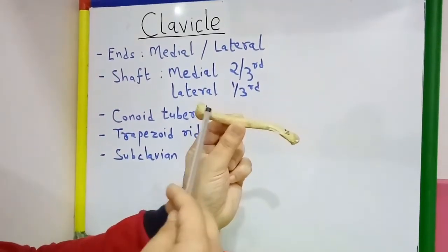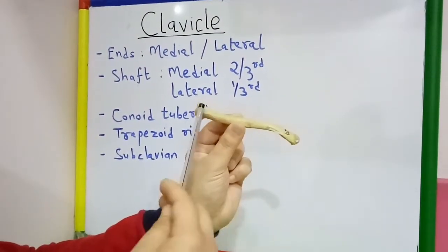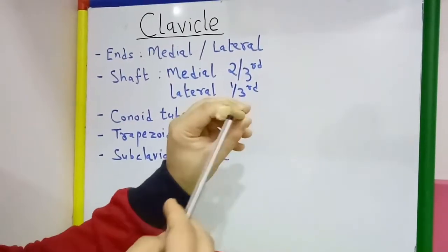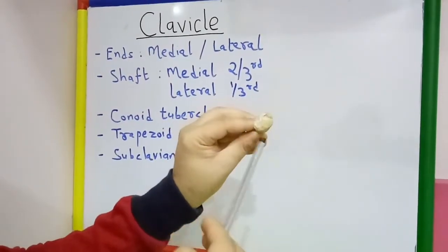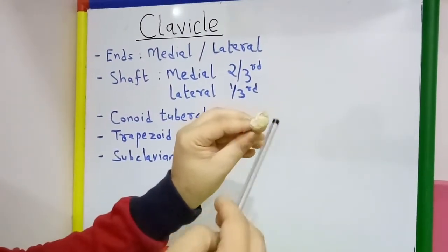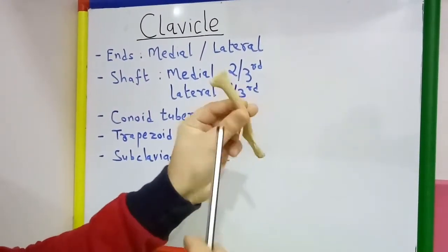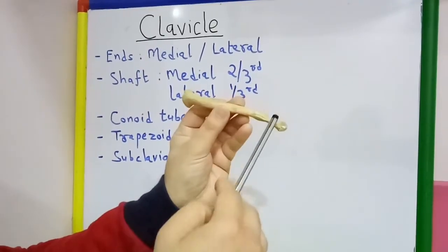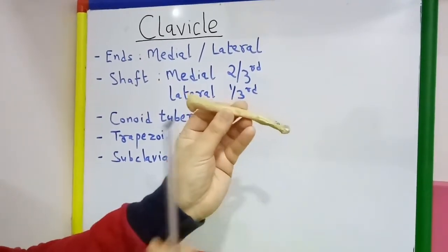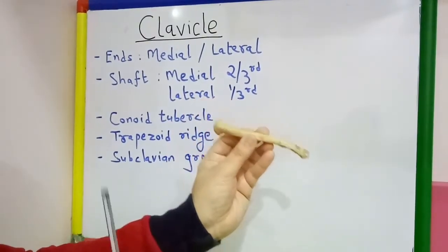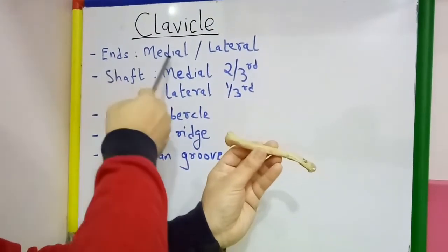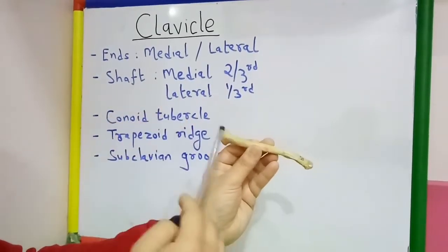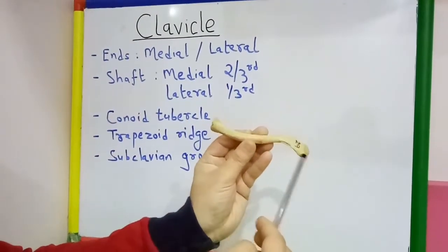The clavicle, because it is situated horizontally, has two ends. This is the medial end which is larger, and this is the lateral end which is smaller and flattened from above downwards. So there are two ends, medial and lateral, and between the two ends there is a shaft.